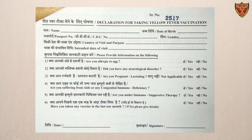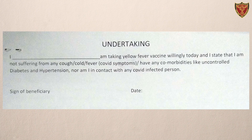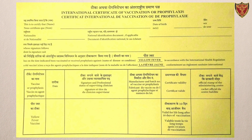We also ask whether they are suffering from any immunocompromised conditions or on any immunosuppressive therapy, and whether they have taken any other live virus vaccine in the last one month. Along with that, we take their signature and the date of COVID vaccination. Along with the yellow fever vaccine consent, we also take a COVID undertaking, wherein the person confirms they are not suffering from any active COVID symptoms, don't have comorbidities like uncontrolled diabetes or hypertension, and are not in contact with any COVID-infected person.